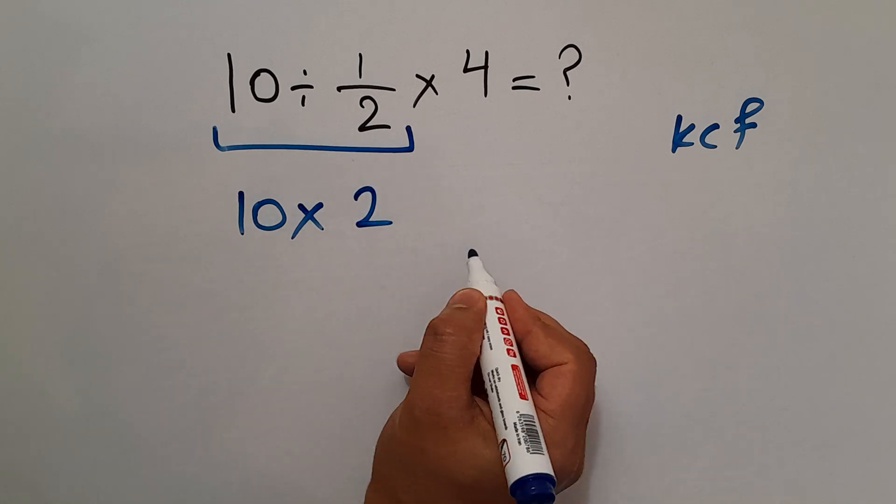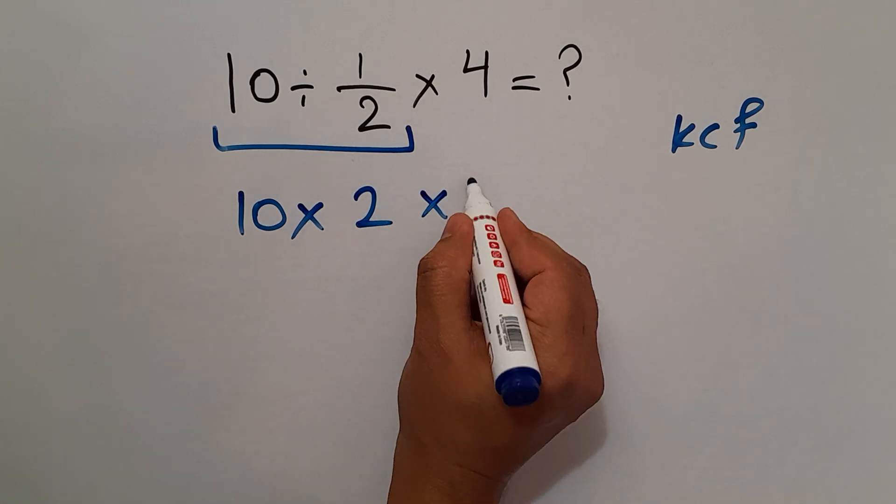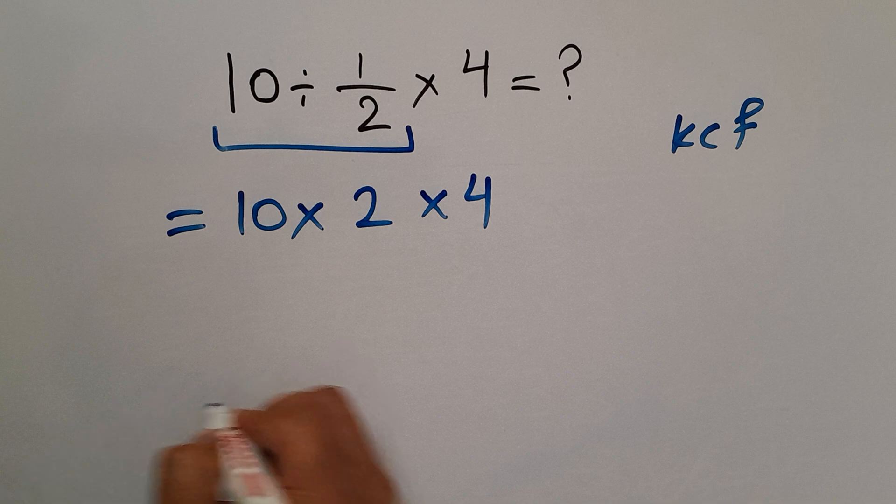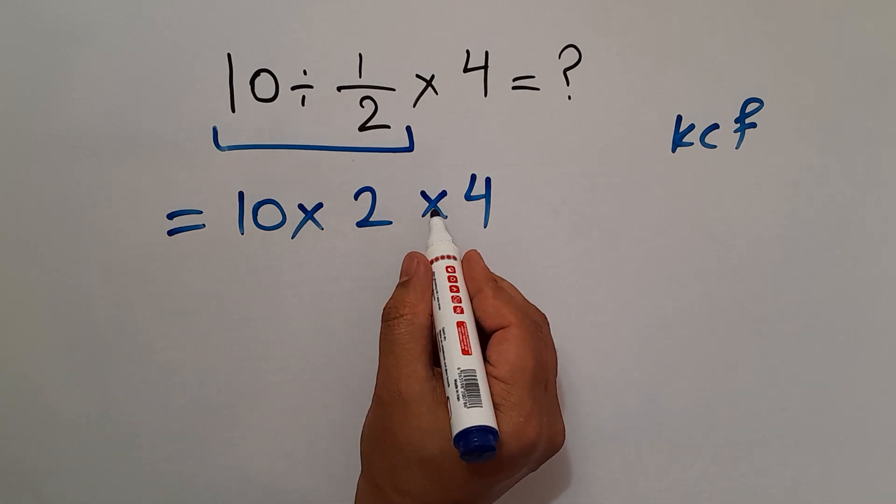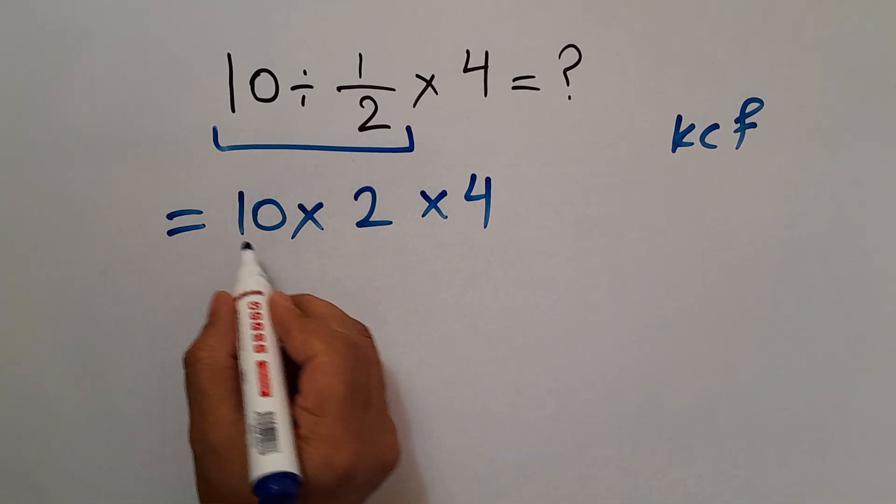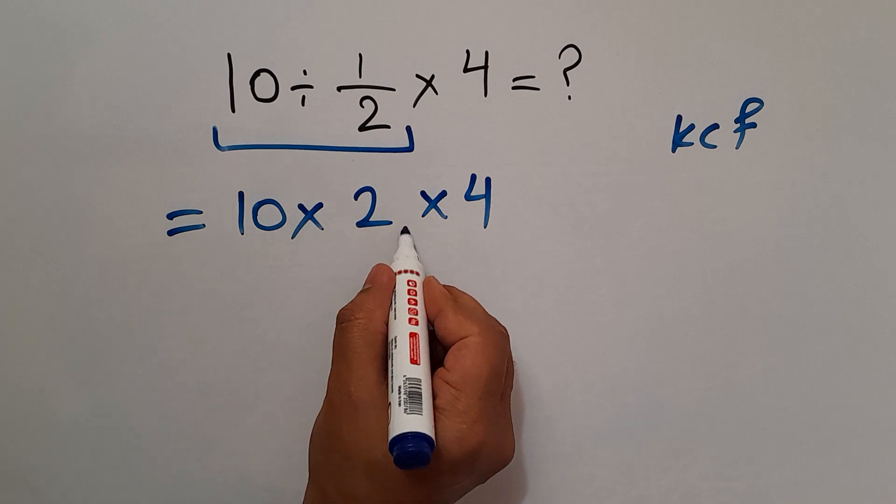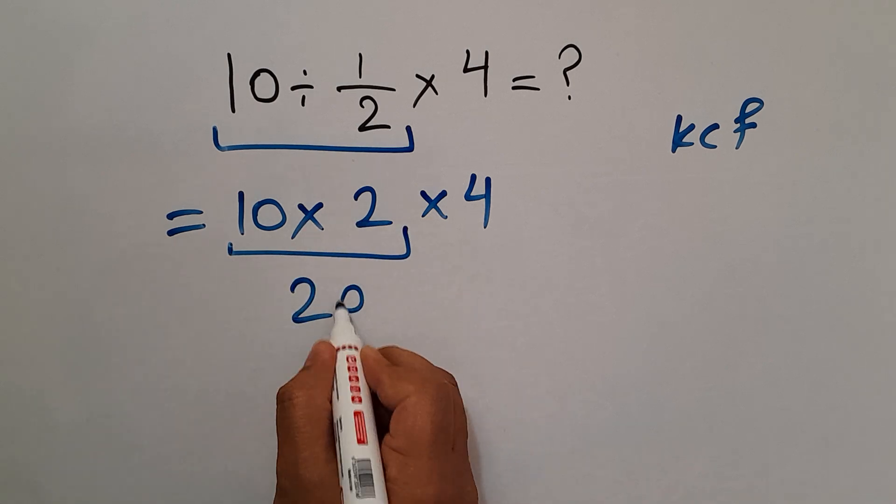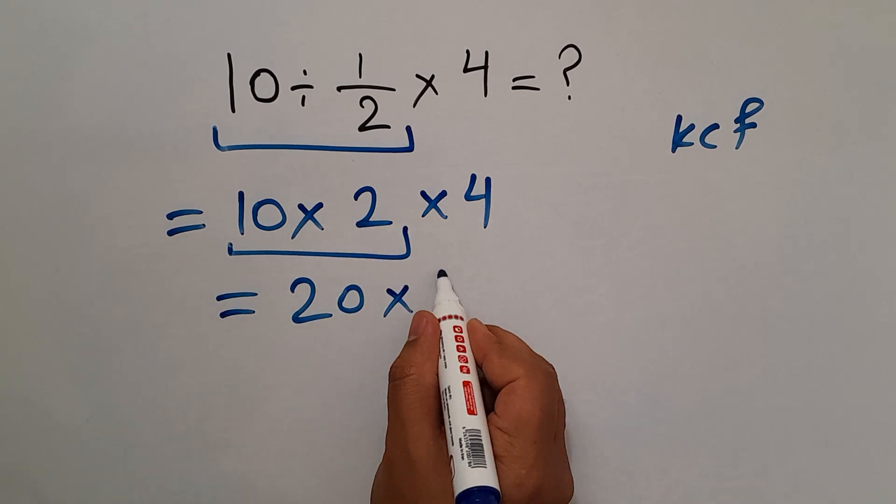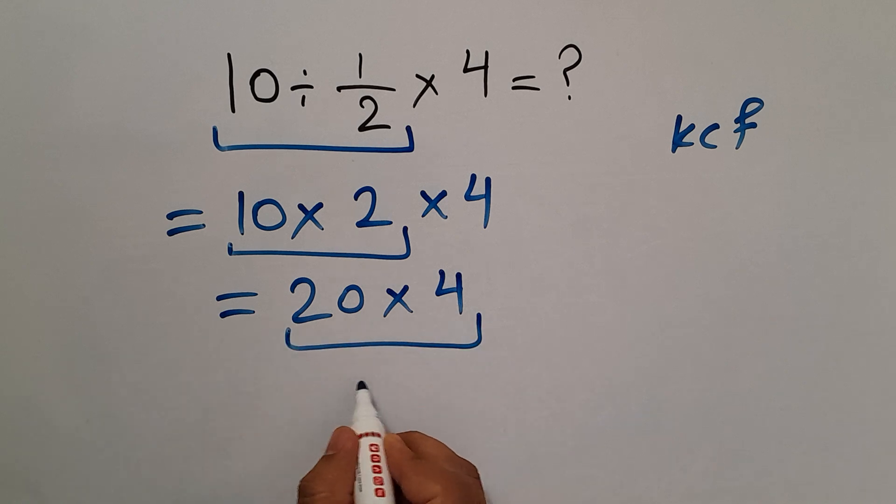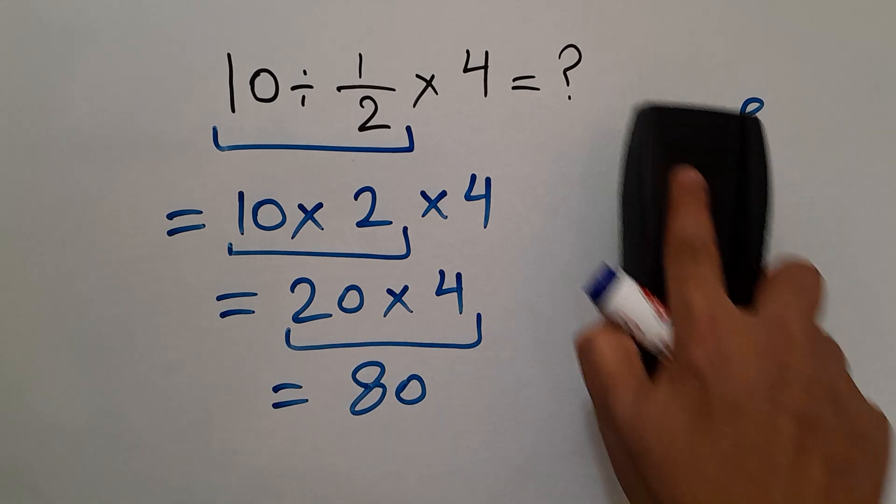Now we have two multiplications. We work from left to right: 10 times 2 equals 20, so 20 times 4 which equals 80. So our final answer to this problem is just 80.